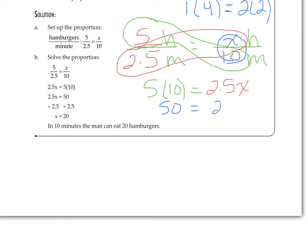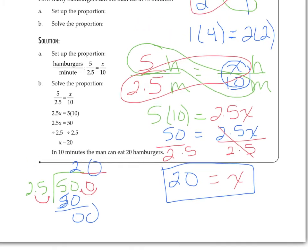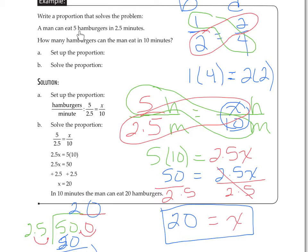Now we use the cross-products rule: 5 times 10 equals 2.5 times X, so 50 equals 2.5X. To isolate X, we divide both sides by 2.5. For the decimal division, we make 2.5 a whole number by moving the decimal one place, which means moving the decimal inside too — so this becomes 500 divided by 25, which makes 20. So X equals 20. Going back to the original question: a man can eat five hamburgers in two-and-a-half minutes, so in ten minutes he can eat 20 hamburgers. That makes sense.